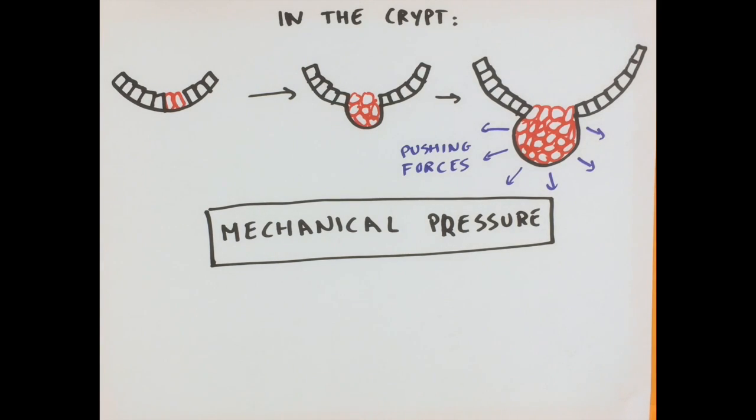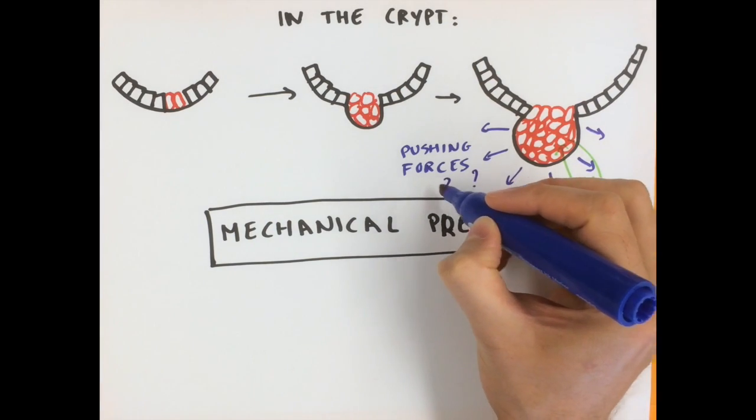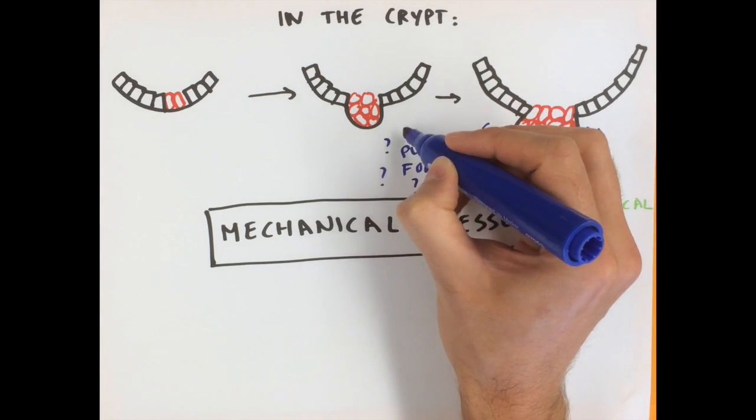People have thought a lot about how tumor cells talk to normal cells in terms of chemical signals. However, we know very little about how the mechanical forces created by too much cell division in a small space affect the cells. This is the question that my research will tackle.